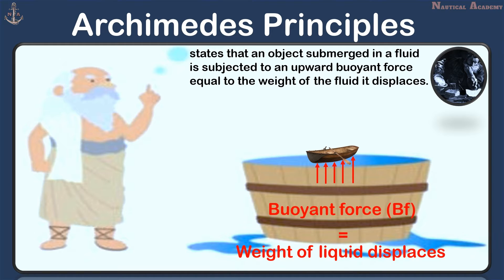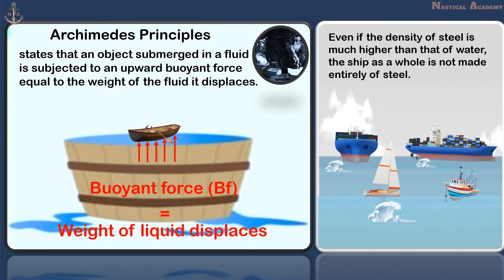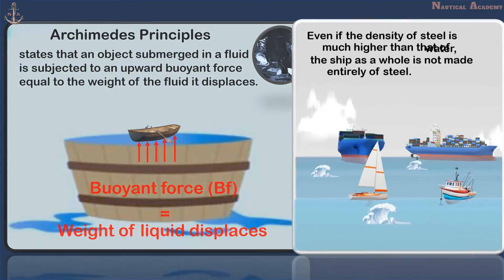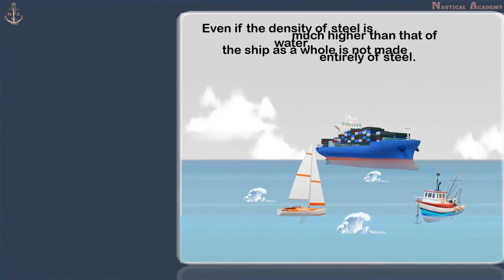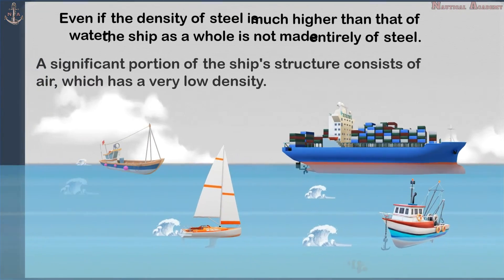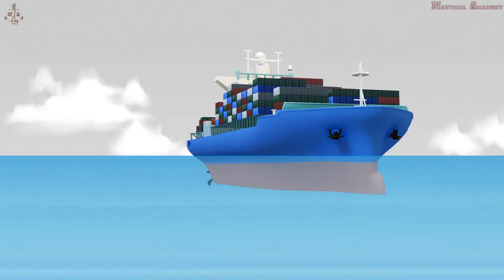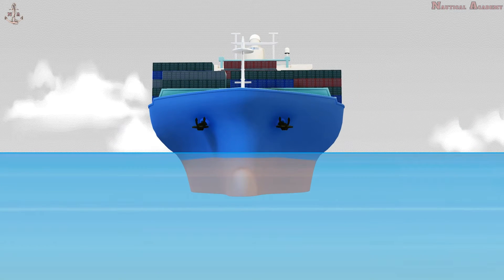Another reason is that even if the density of steel is much higher than that of water, the ship as a whole is not made entirely of steel. A significant portion of the ship's structure consists of air, which has a very low density. When a ship is placed in the water, it is acted upon by two forces.